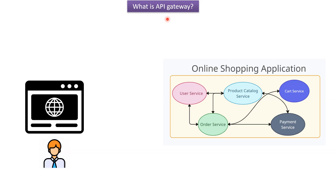This video tutorial will explain what is API Gateway. Here you can see an online shopping application that has different microservices, and each microservice has different responsibilities. For example, user service is responsible for user-related functionalities like user create, user update, user delete, user get, etc. And product catalog service is responsible for getting the list of products, adding the product, removing the product, etc. Each microservice has different responsibilities and they communicate with each other.